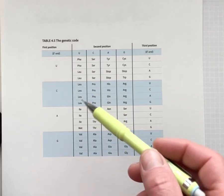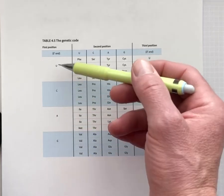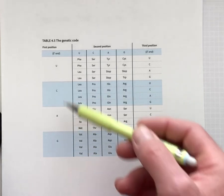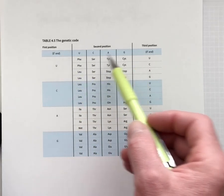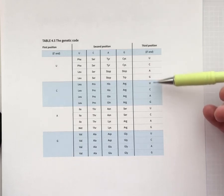We have the first codon position, the sequence in the messenger RNA at the first of three nucleotide positions listed here, and then the second one is these columns, and then the third codon is each set as indicated here.